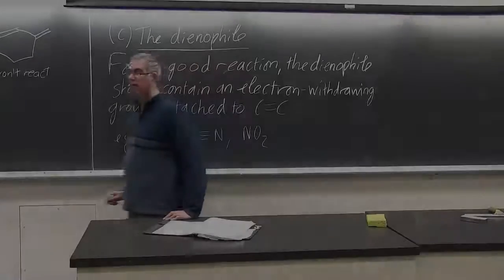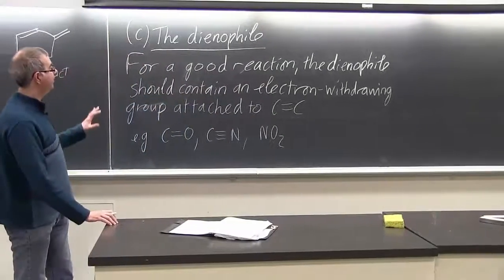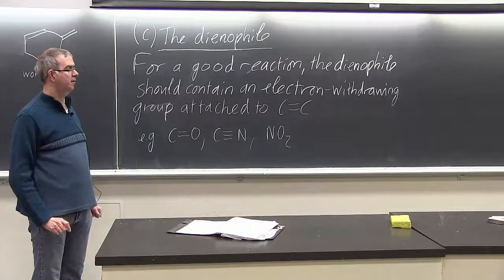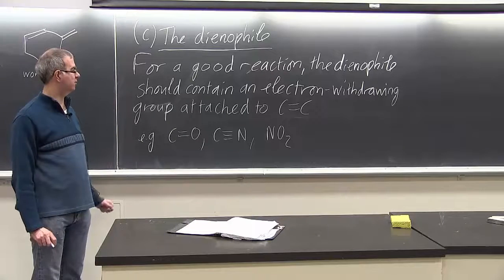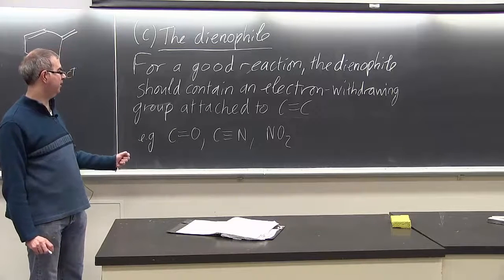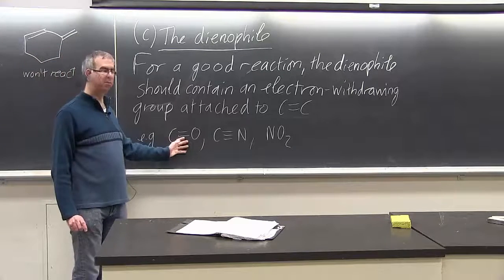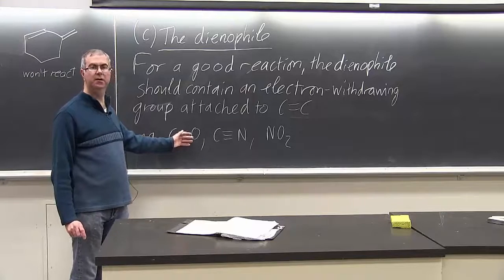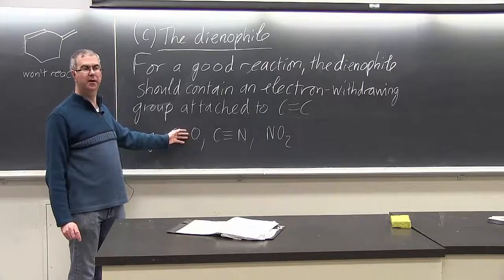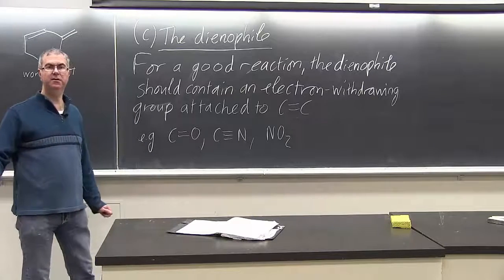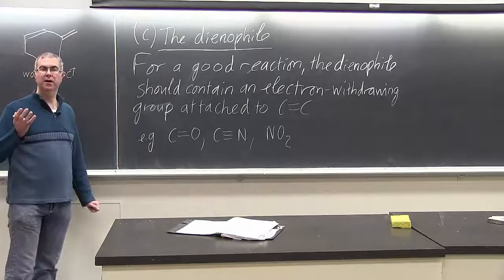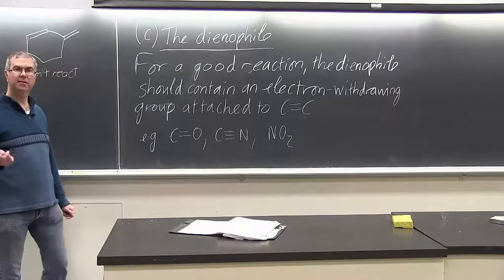So for a good dienophile, we usually want to have some kind of electron withdrawing group attached to the C double bond C. And the most common example of this would be a carbonyl group, which could be in the form of an aldehyde, a ketone, an ester, an amide, a carboxylic acid.